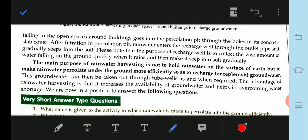The rainwater falling in open space around the building goes into the pre-collection pit through the holes in the concrete slab cover. This causes the rainwater to enter the recharge well through the outlet pipe and gradually seep into the soil.